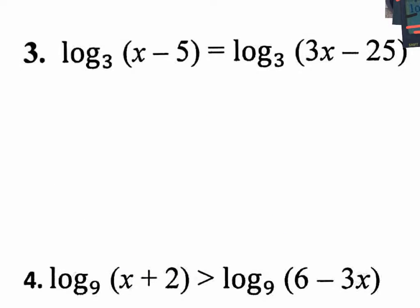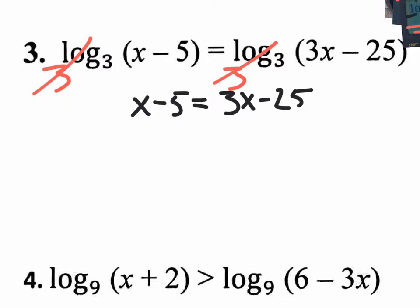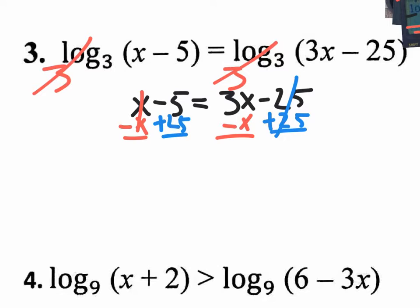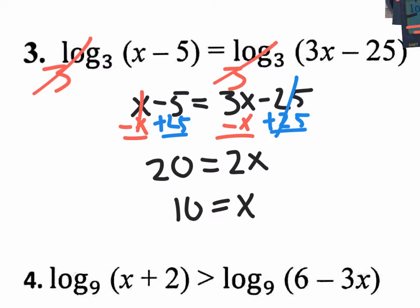Number three: let's get rid of both log base 3s. We're going to raise both sides to be the power of base 3. The book doesn't even show this step because it's a waste of time — you already know you're going to cancel them out. What you're left with is the simple equation x minus 5 equals 3x minus 25. We solve by moving x's to one side: subtract x and add 25. We end up with 20 equals 2x, which means x equals 10.